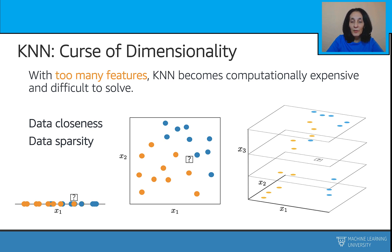In the three-dimensional example, we can see that the points are now far apart and sparse. As we add more dimensions to the data, it becomes more and more spread apart. In other words, we might need more data to avoid sparsity and be able to find neighbors in, say, 100-dimensional space.